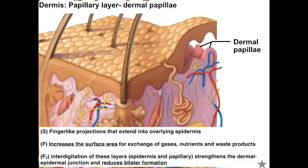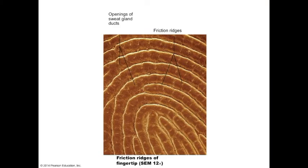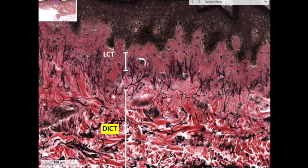The dermal papillae themselves are not visible externally. There are larger folds on the outside of the skin called friction ridges, which do not necessarily correspond to the dermal papillae. These friction ridges help with gripping and make up your fingerprints. They also have a high concentration of sweat glands in the thick skin of your palms and feet, which for unknown evolutionary reasons respond more to mental and emotional stress than to actual heat stress.